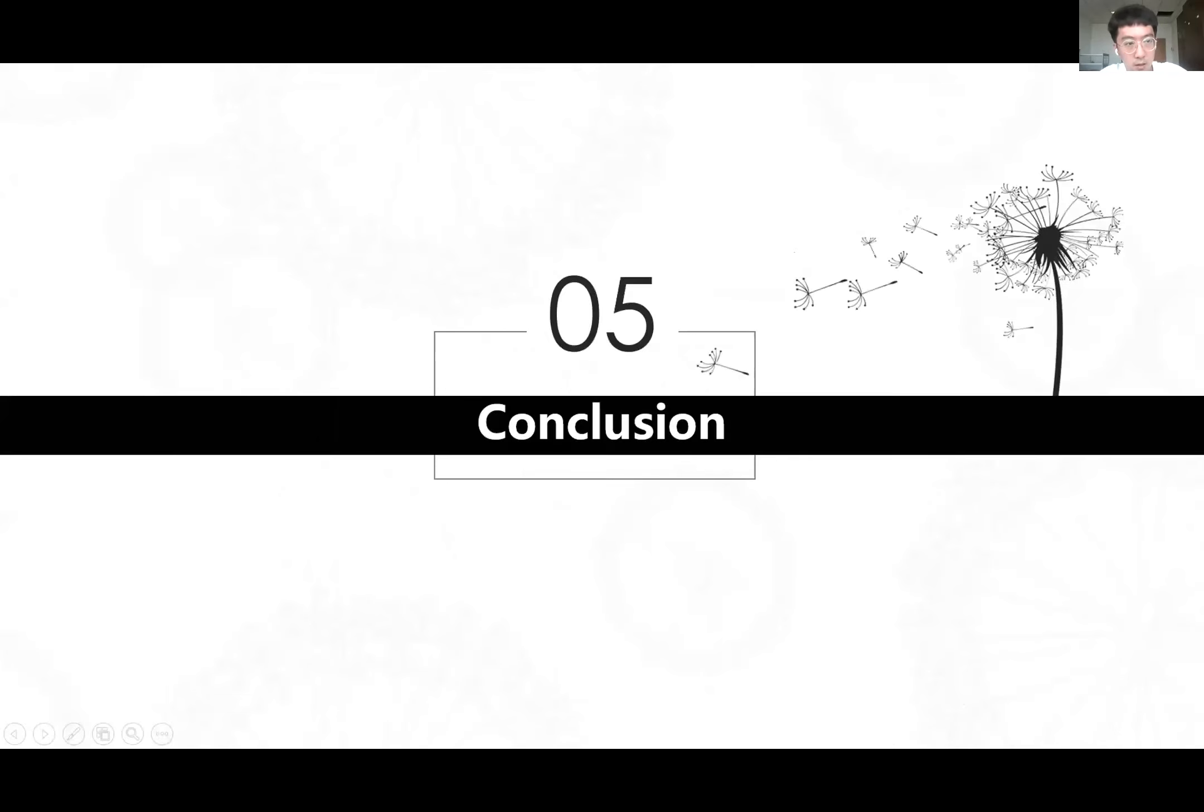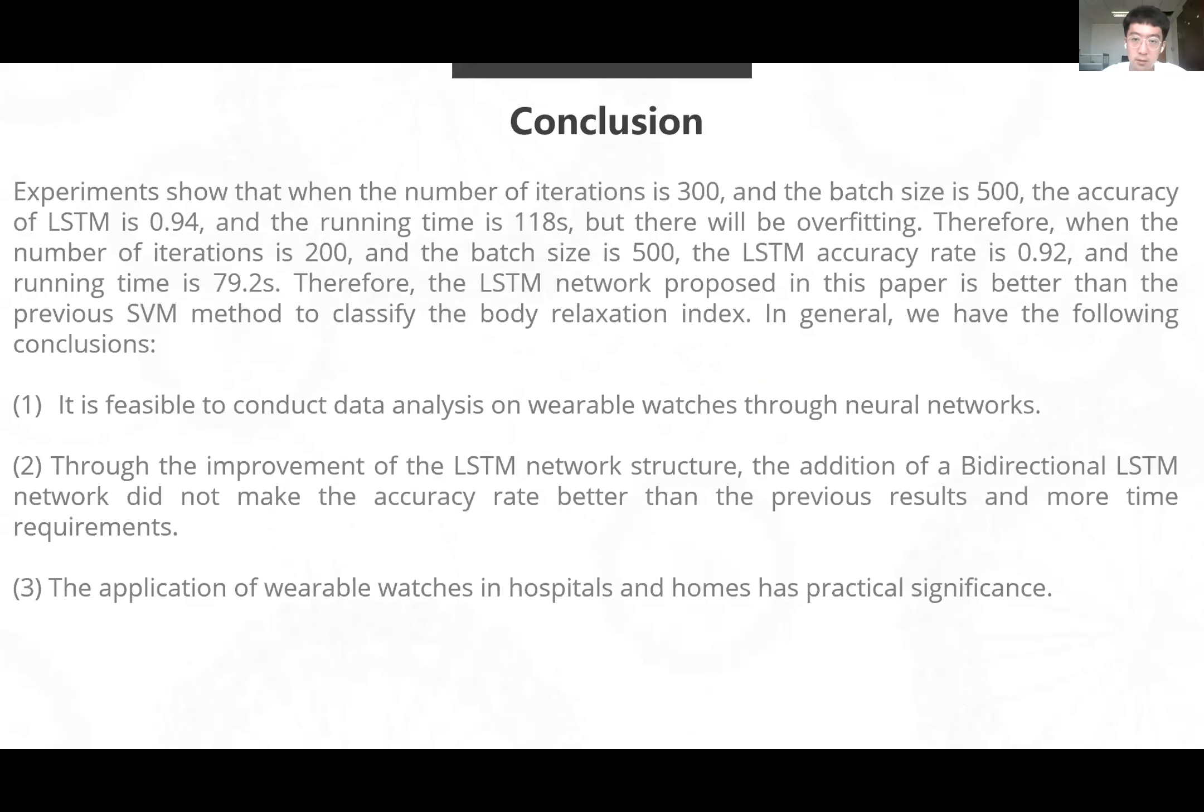Conclusion. Experiment shows that when the number of iterations is 300 and the batch size is 500, the accuracy of LSTM is 0.94 and the running time is 118 seconds, but there will be overfitting. Therefore, when the number of iterations is 200 and the batch size is 500, LSTM accuracy rate is 0.92 and the running time is 79.2 seconds. The LSTM network proposed in this paper is better than the previous SVM measure to classify the body relaxation index.